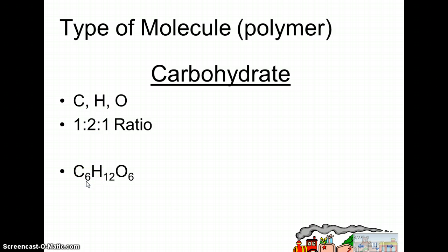So an example of this is glucose, C6H12O6, and you can see how the carbons and the oxygens are the same and there's twice as many hydrogens.